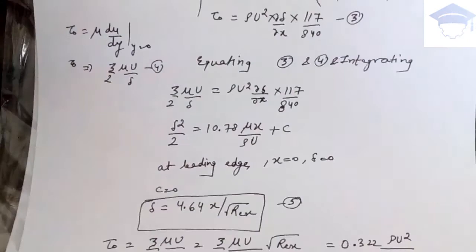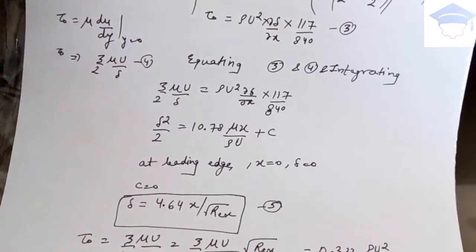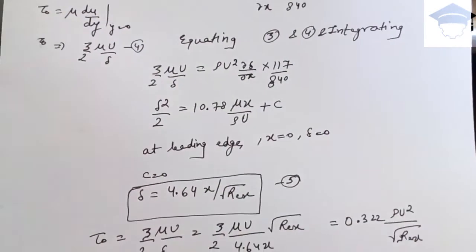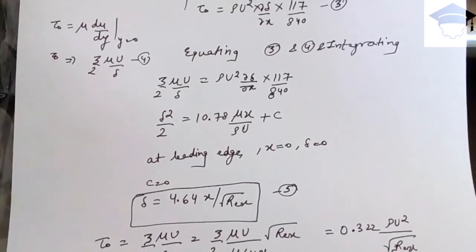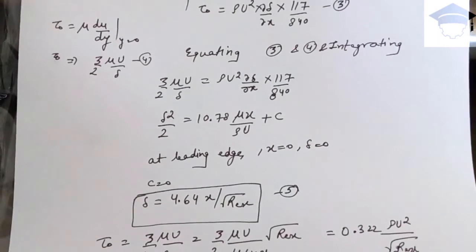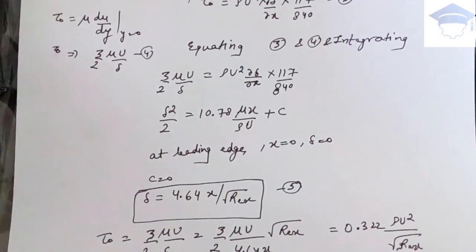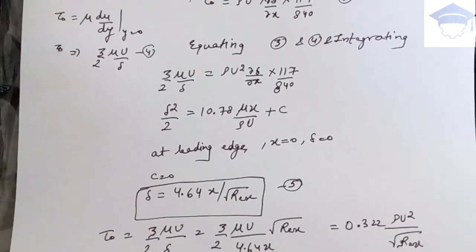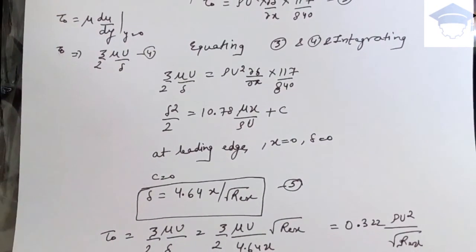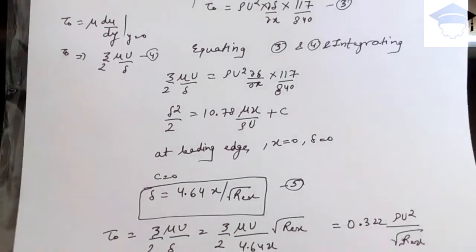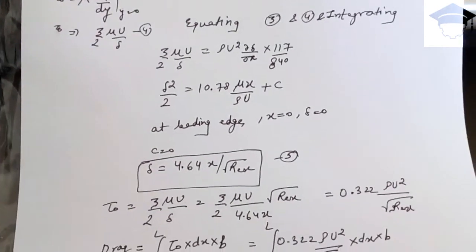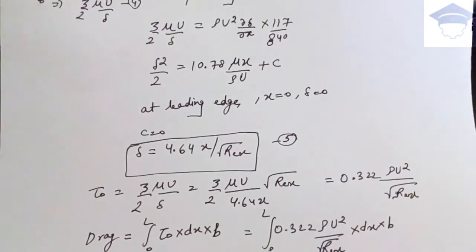So we get δ = 4.64x / √(Re_x). This is equation number 5. This is the boundary layer thickness formula.